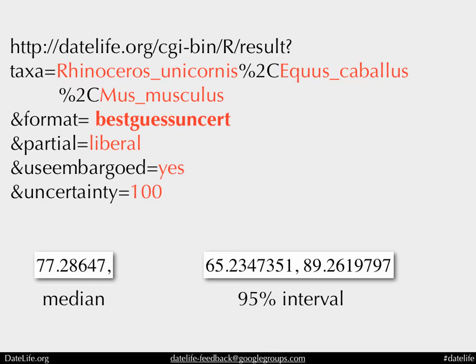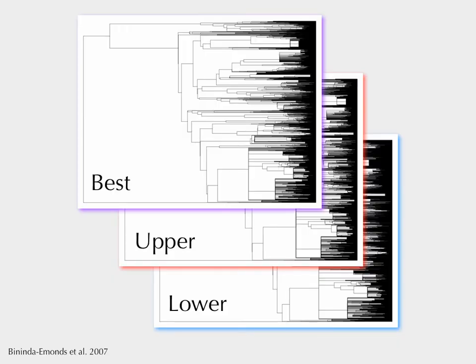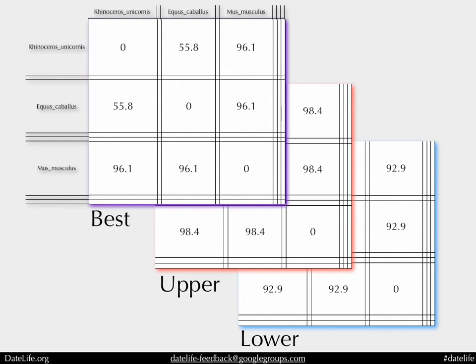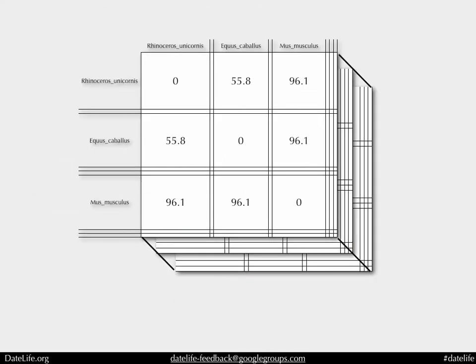How does this actually work? You take a study that has some trees — for example, Bininda-Emonds' mammal supertree, which is very famous. For each tree, we compute essentially half of a pairwise distance matrix: the age of the most recent common ancestor of each pair of taxa. I'm showing three taxa here, but this is actually a 4,000-by-4,000 cell matrix for one tree. The advantage is that when you want to select just two species — say, rhinoceros and horse — you don't need to do a tree traversal. You just subset the matrix: give me row 1 and row 5 and column 1 and column 5. Done.